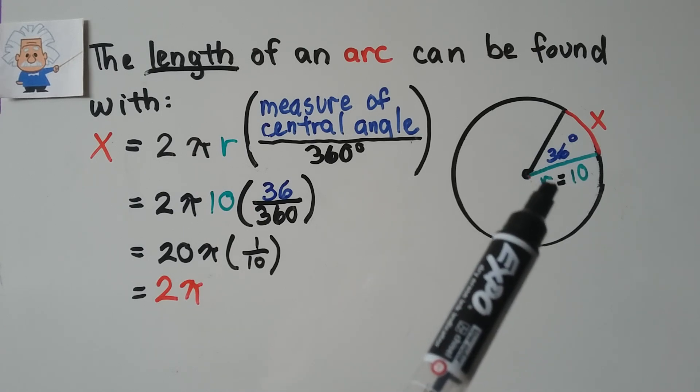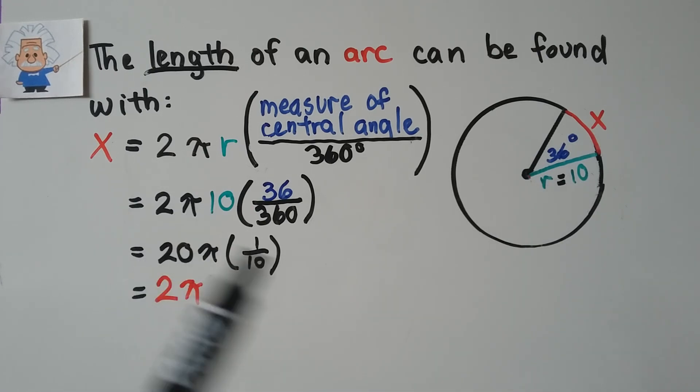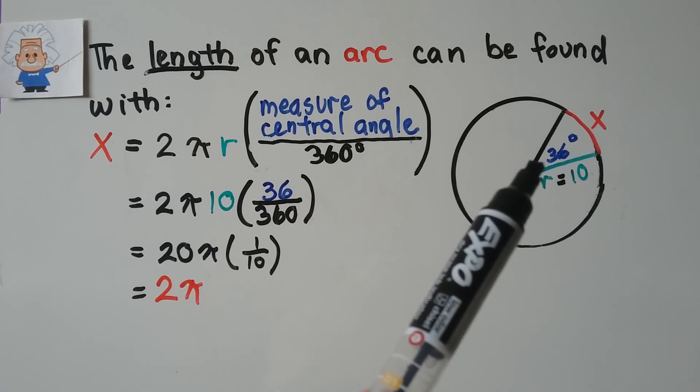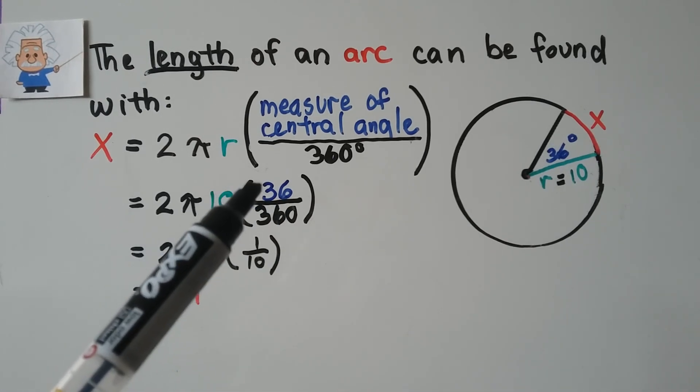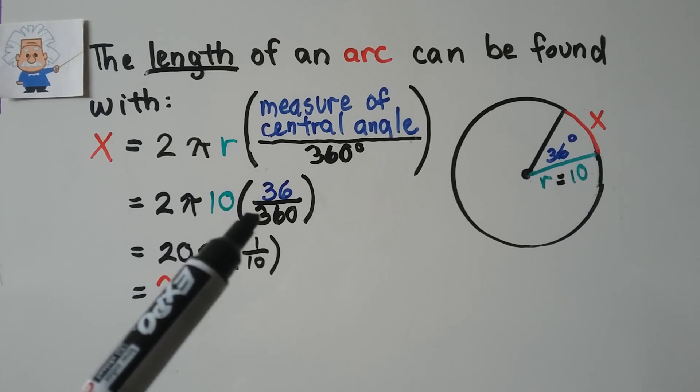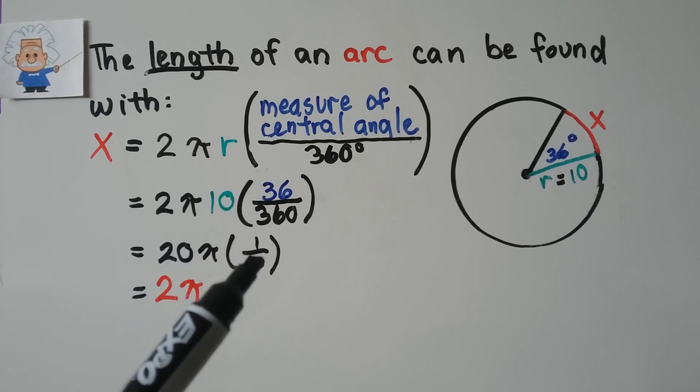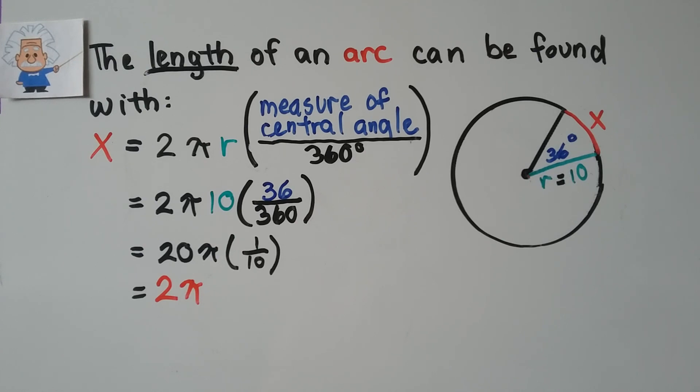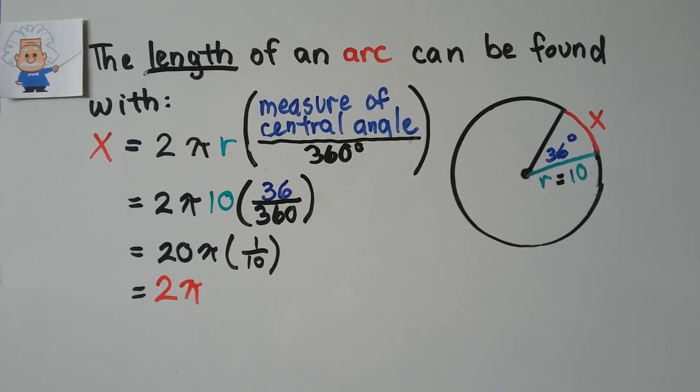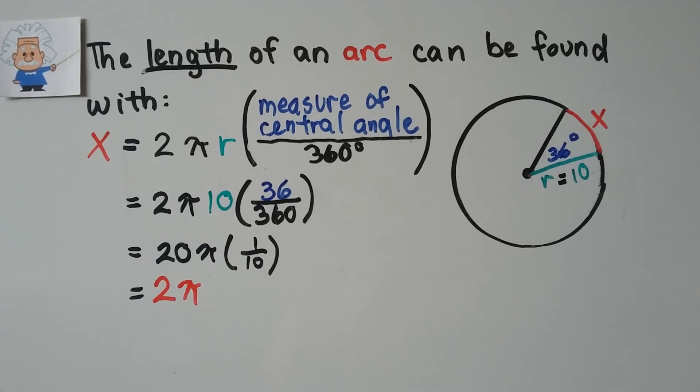If we know the radius is 10, we substitute that in. If we know the central angle is 36 degrees, we substitute that in. 36 divided by 360 is 1 tenth, and we get 20 pi times 1 tenth, which gives us 2 pi. So we know the length of this arc, X, is 2 pi. We just multiply 20 times the 1 tenth.